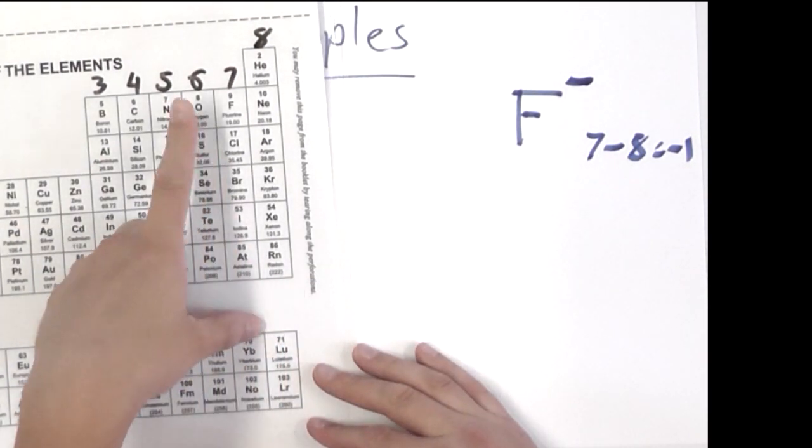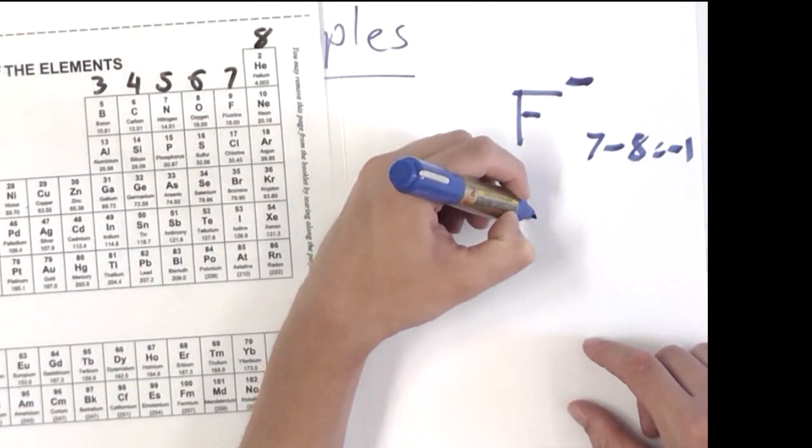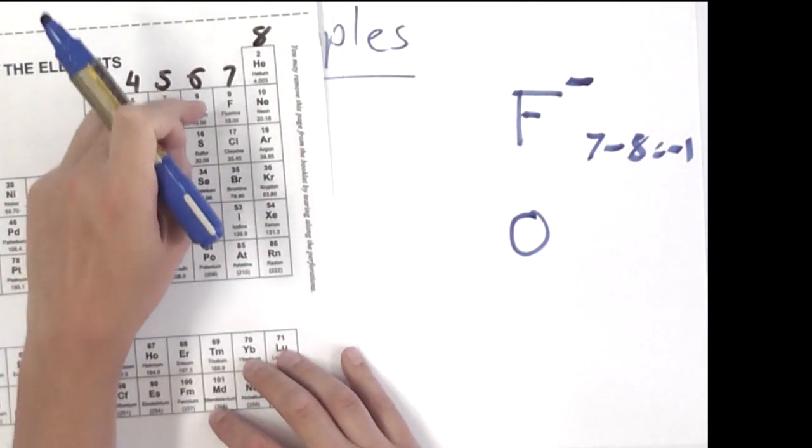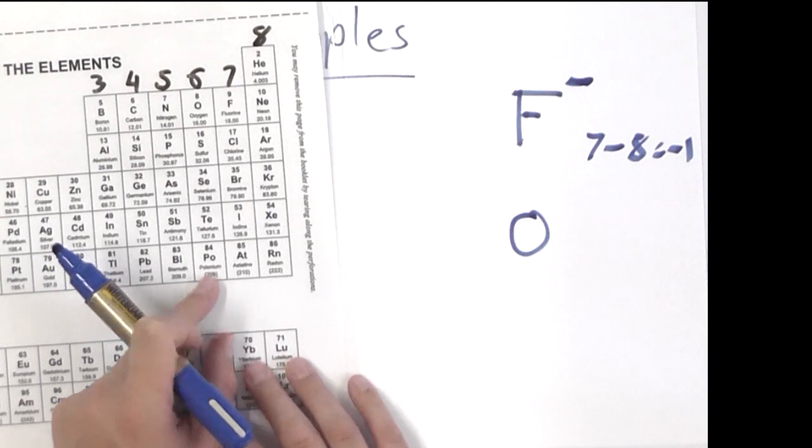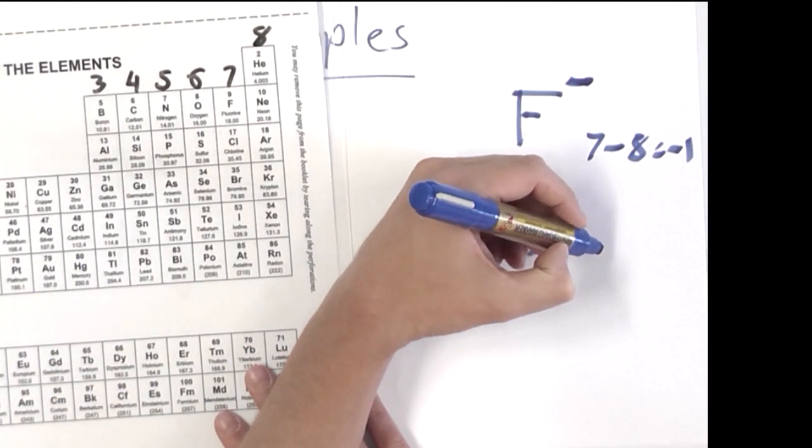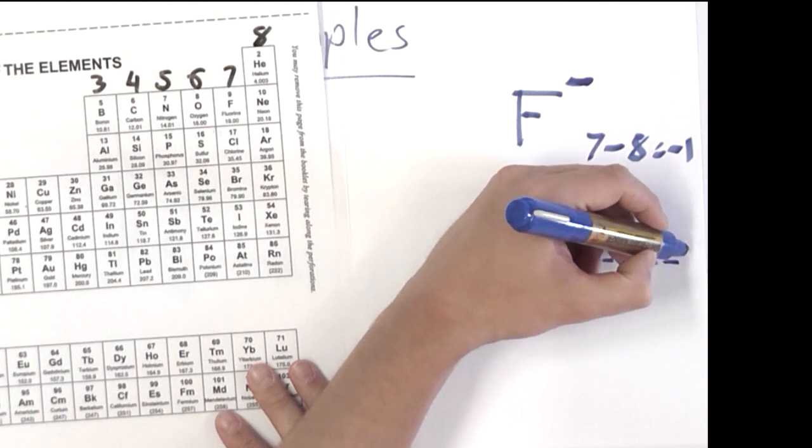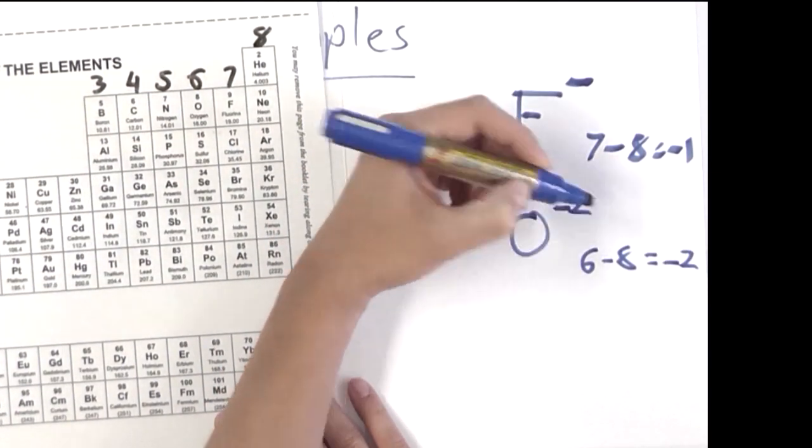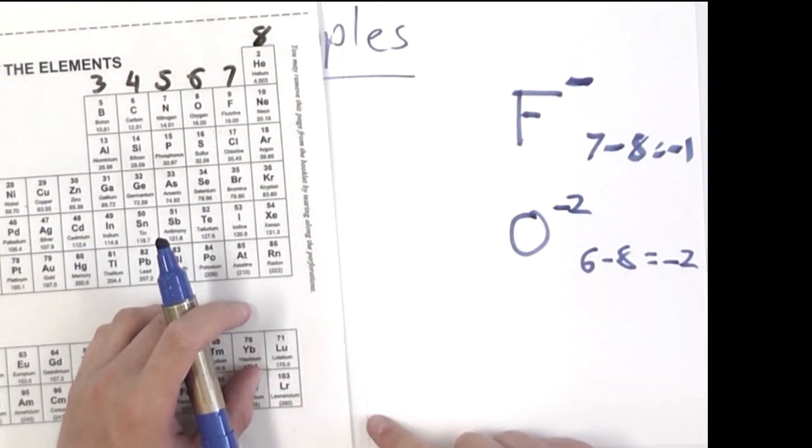If I do oxygen, so oxygen will be our next one. Oxygen is in group 6 over here. So to figure it out, if I do 6 minus 8, that gives me minus 2. So the charge on an oxide ion is minus 2.